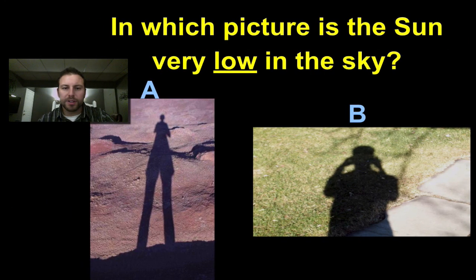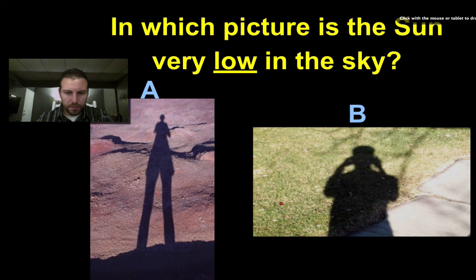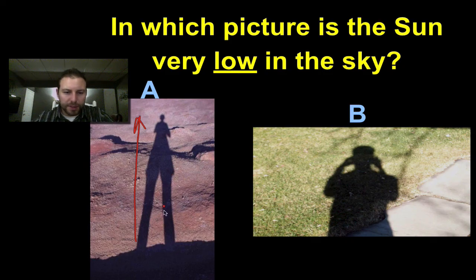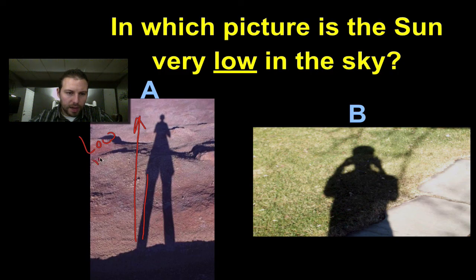Okay, so which picture is the sun very low in the sky? So we have to look at the length of our shadow. So we have this one right here versus this one. A little bit different photographs, but we can see that this one is really stretched out. So this is low in the sky.